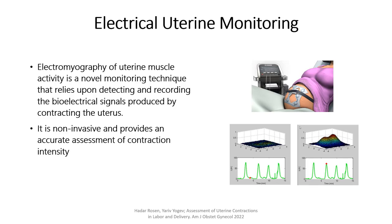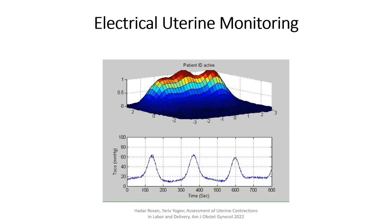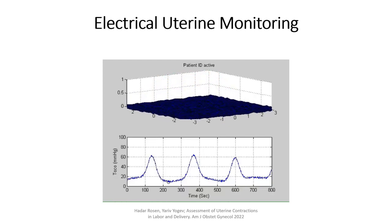Electromyography of uterine muscle activity is a novel monitoring technique that relies upon detecting and recording the bioelectrical signals produced by the contracting uterus. It is non-invasive and provides an accurate assessment of contraction intensity. The following animation demonstrates simultaneous measurements obtained from electrical uterine monitoring and intrauterine pressure catheter.